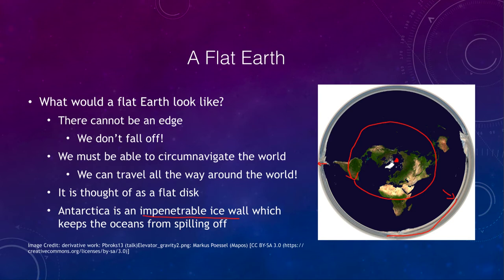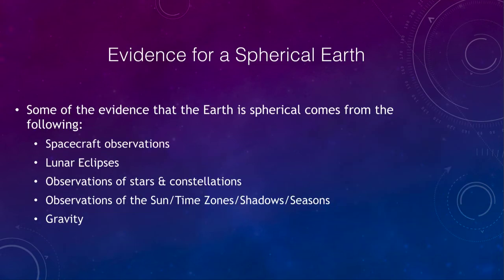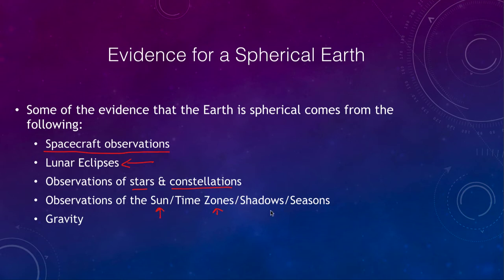Now let's look at some of the evidence for a spherical earth. This is not an exhaustive list — just several examples we can look at: observations from spacecraft, lunar eclipses, observations of the stars and constellations, and some other observations including the sun, time zones, shadows, seasons, and finally gravity. There are many more, but I simply want to look at some of these and give an understanding of them.